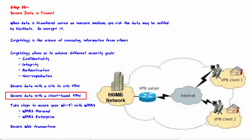Secure data with a client-based VPN. Here, a piece of software is installed on the end user's PC. This allows the remote user to establish a VPN from their laptop to the security appliance on their home network — and by home network we don't mean where you live, but the main office. The VPN allows all data between the laptop and the remote network to be tunneled and therefore encrypted.